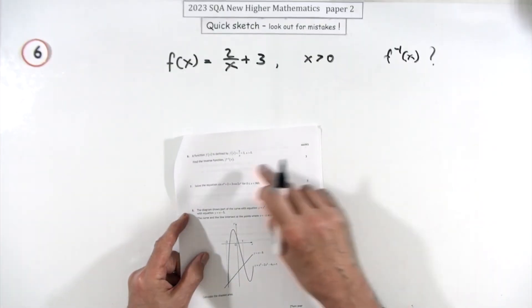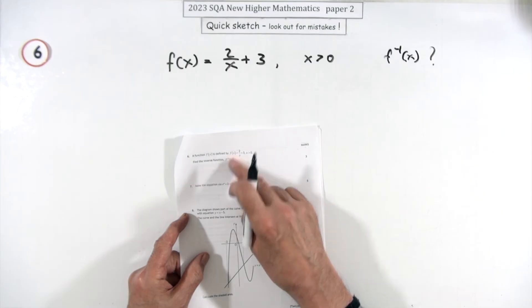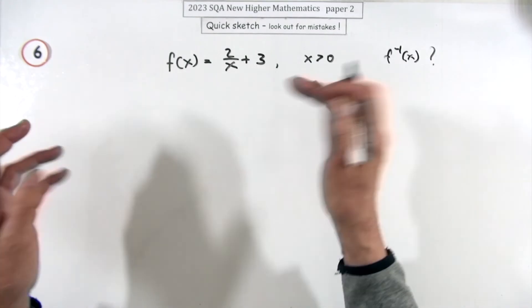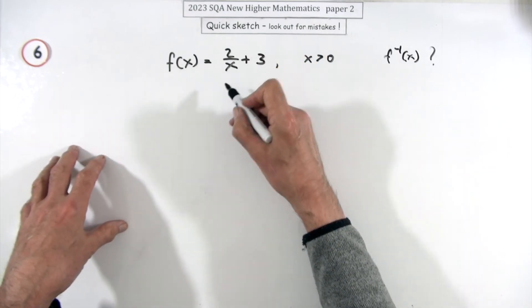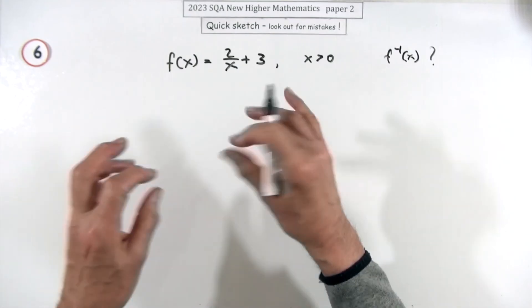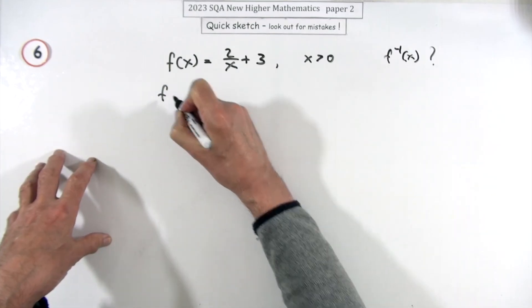Number six for three marks: find the inverse function of this function here. Well there's a couple of ways you can do it. I'm just going to do it one way. Most people will just put y equals and then rearrange it, but rather than mess about changing variables, I think I'll just do it this way.